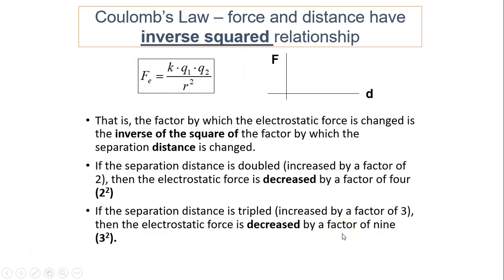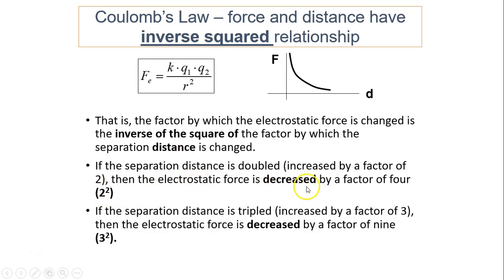In Coulomb's Law, force and distance have an inverse square relationship. On a graph, it looks like a decay curve. The factor by which electric force is changed is the inverse of the square of the factor by which separation is changed. So if the distance is doubled, the force decreases by two squared — it is quartered. If the separation is tripled, the force decreases by a factor of nine, which is three squared.